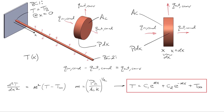A second common boundary condition states that the flux at the end of the rod, negative k dT/dx, equals zero at x equals L — the length of the rod — which applies when the tip is insulated. So the first derivative of temperature equals zero at x equals L. With these two boundary conditions, you can solve for the temperature and obtain different temperature profiles depending on the boundary conditions applied.